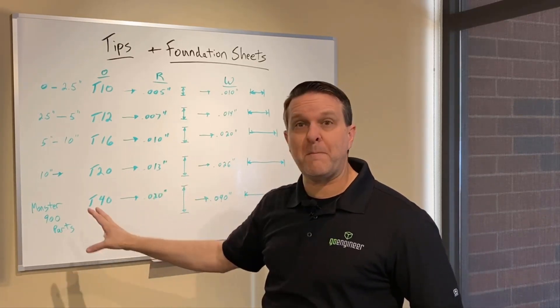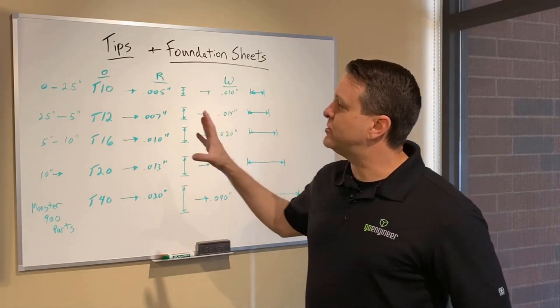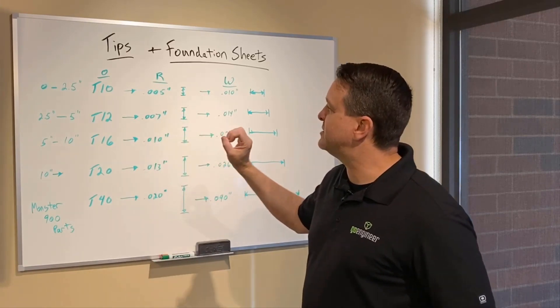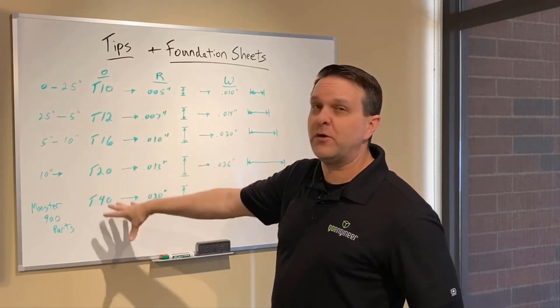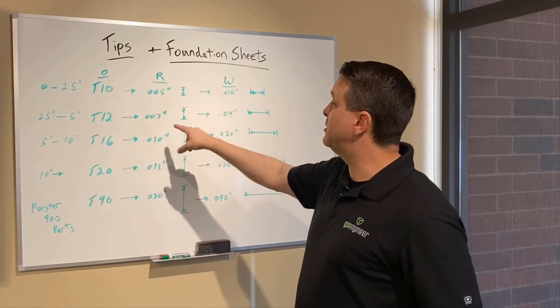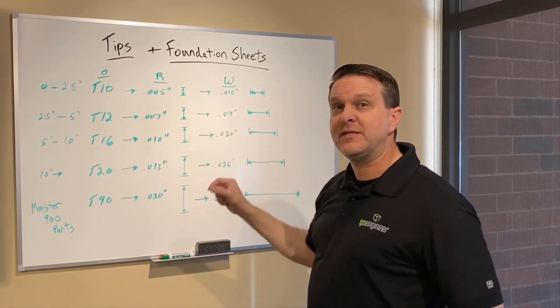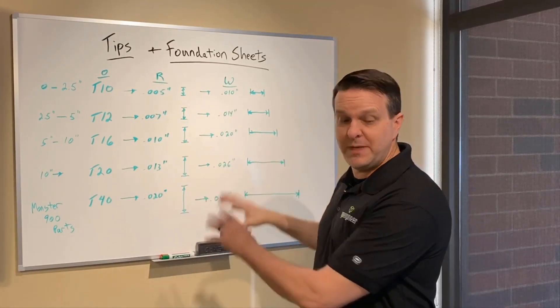And again, the T40s are for monster, monster parts on the big 900 systems. These are just rough ideas. Most of this is based on the features of a part. So just consider that based on a feature, if it's a small feature, I might want to consider a smaller orifice to get a better resolution, to create a smaller toolpath to actually fill in the details of that part.